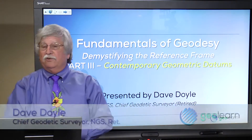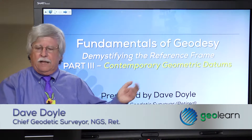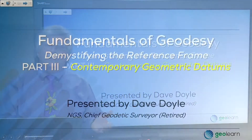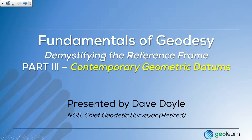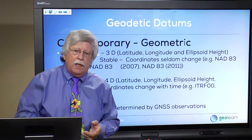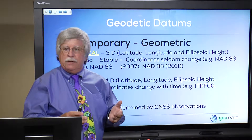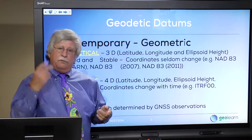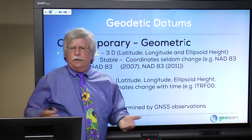Hello, this is Dave Doyle and welcome to GeoLearn and the class today on fundamentals of geodesy and contemporary geometric datums — a transition from classical horizontal datums. Let's get started and look at the basic definition of a geometric datum versus our classical approach to what we've always referred to as a horizontal datum. In contemporary positioning, a geometric datum is three-dimensional; classical horizontal datums were two-dimensional — latitude and longitude, or northings and eastings.